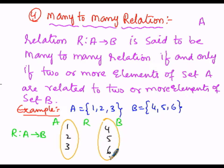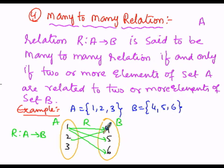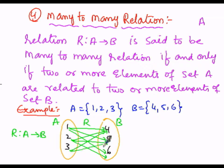As per the rule of the many-to-many relation, two or more than two elements of set A must have a relationship with two or more than two elements of set B. The relation is as follows: element 1 maps to 4, 5, and 6 — so element 1 has three images. Similarly, element 2 has three images: (2,4), (2,5), and (2,6). Element 3 also has three images: (3,4), (3,5), and (3,6).